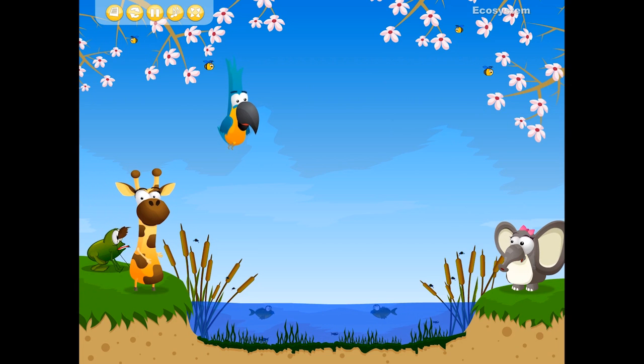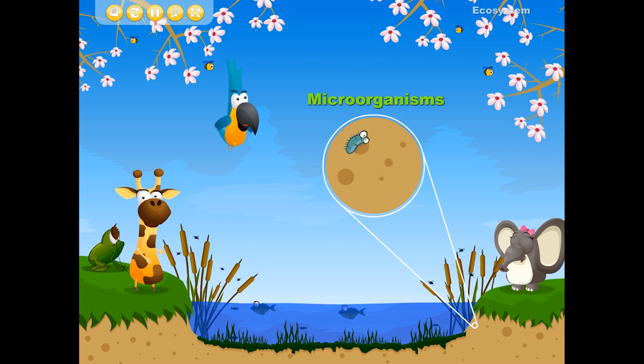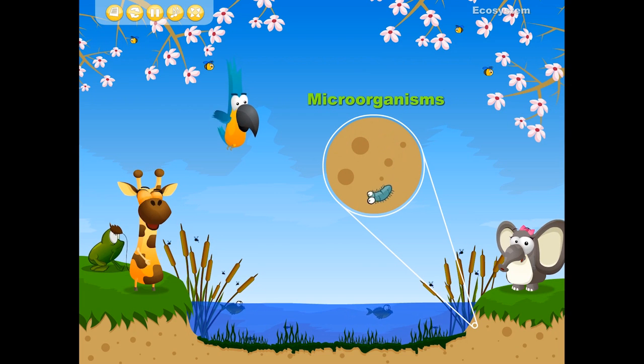An ecosystem is similar to a community and consists of both living organisms and their habitat. Living organisms include animals, plants, insects, and various microorganisms.